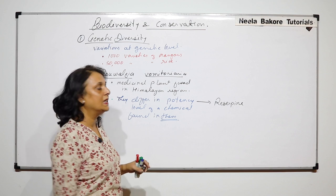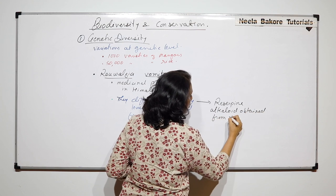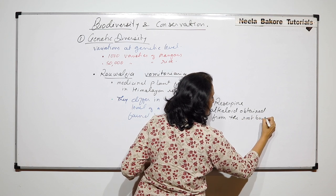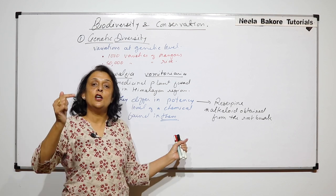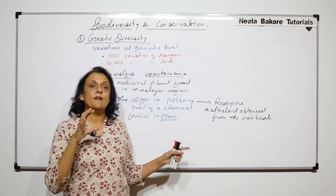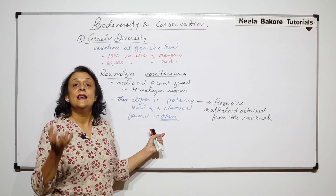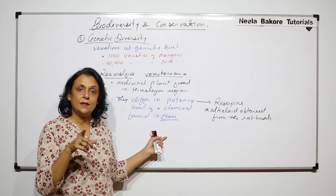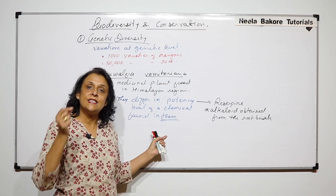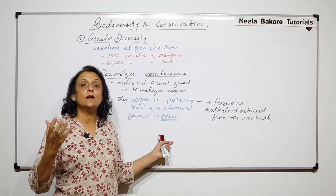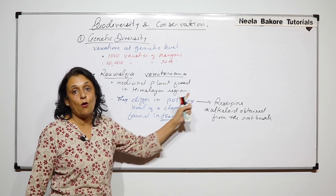Reserpine is an alkaloid obtained from the root bark of this plant. Its power varies in different varieties. A variety found at the bottom of the Himalayan region probably has lower potency, and as you go higher up the Himalayan region, the varieties found there probably have the same reserpine but with a higher potency.